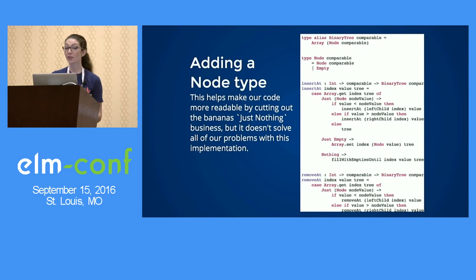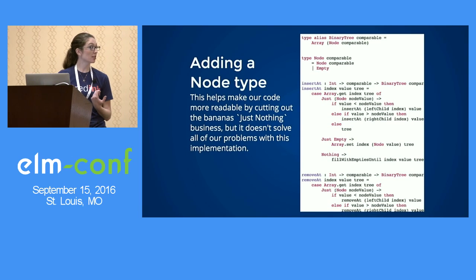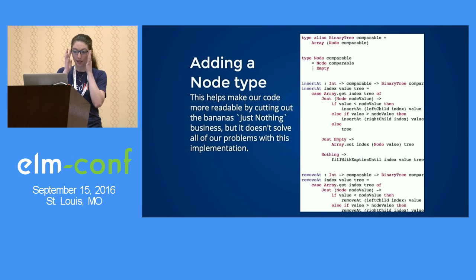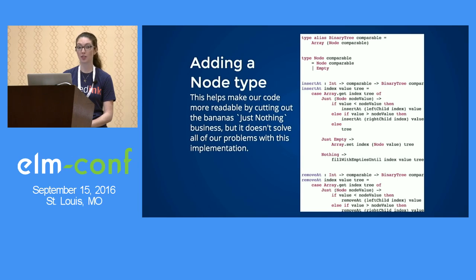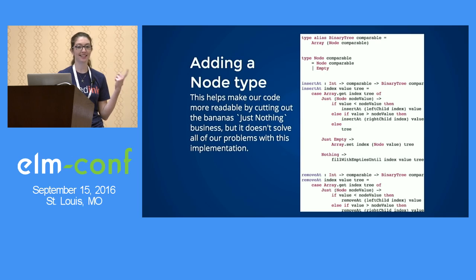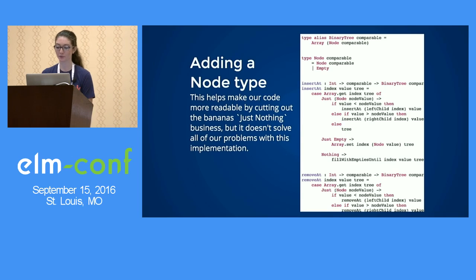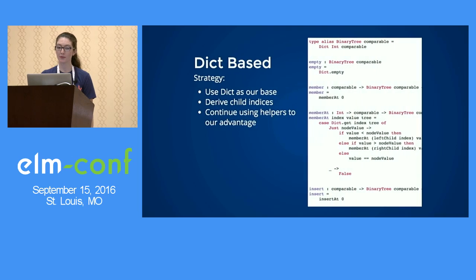One small thing we can do to improve this implementation is by using a type rather than a Maybe comparable to signify our values or lack of values. It's a little bit easier to read and it gets away from the 'Just Just node value' pattern we saw before. But it's still not great — I still wouldn't necessarily want to come to this code. So let's move to the next version.